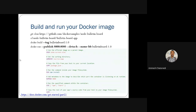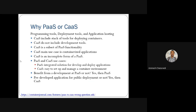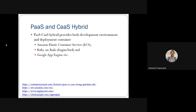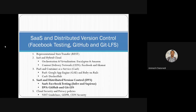CaaS is a subset of PaaS — CaaS covers only part of deployment, whereas PaaS covers both development and deployment. Both PaaS and CaaS are beneficial for management purposes, and they can also be hybrid, as in the case of Amazon's Elastic Container Service, Ruby on Rails, Engine Yard, and Google App Engine. Next, we had seen SaaS and distributed version control, which we'll see in the next class.